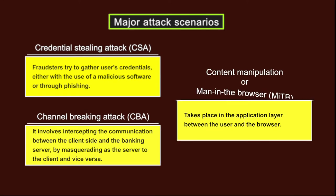The third attack scenario is content manipulation, also called man-in-the-browser attack, which takes place in the application layer between the user and the browser. The adversary is granted with privileges to read, write, change and delete the browser's data while the user is unaware about it.